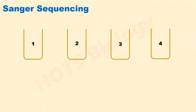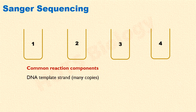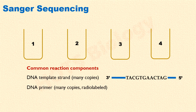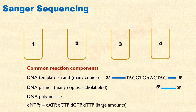Each of these reactions has some components that are common to all. These common components are: first, DNA template strand — many copies of this strand are used in each reaction. Second component is DNA primer — again many copies are used. Sanger radio-labeled these primers for detection purposes. Third component is DNA polymerase. And fourth component consists of all 4 standard deoxynucleotides or dNTPs, used in large amounts.